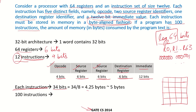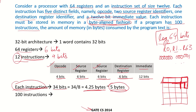34 bits means 4.25 bytes per instruction. Since we are using byte-aligned storage, the next instruction can only start at a byte address. So each instruction actually requires 5 bytes. The next instruction or data is put only after 5 bytes. Therefore, for 100 instructions, the memory required is 100 × 5 = 500 bytes.